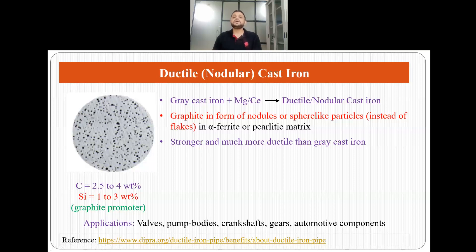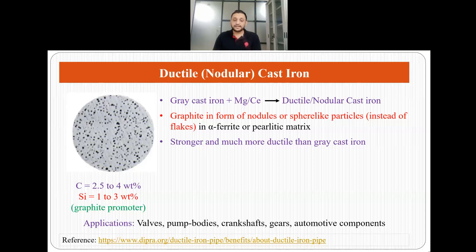This ductile or nodular cast iron is much stronger and much more ductile than gray cast iron. The composition is the same — carbon 2.5 to 4 weight percent, silicon 1 to 3 weight percent — but the addition of magnesium and cerium converts the graphite flakes to graphite nodules, which improves the properties. Applications of ductile cast iron include valves, pump bodies, crankshafts, gears, and automotive components.